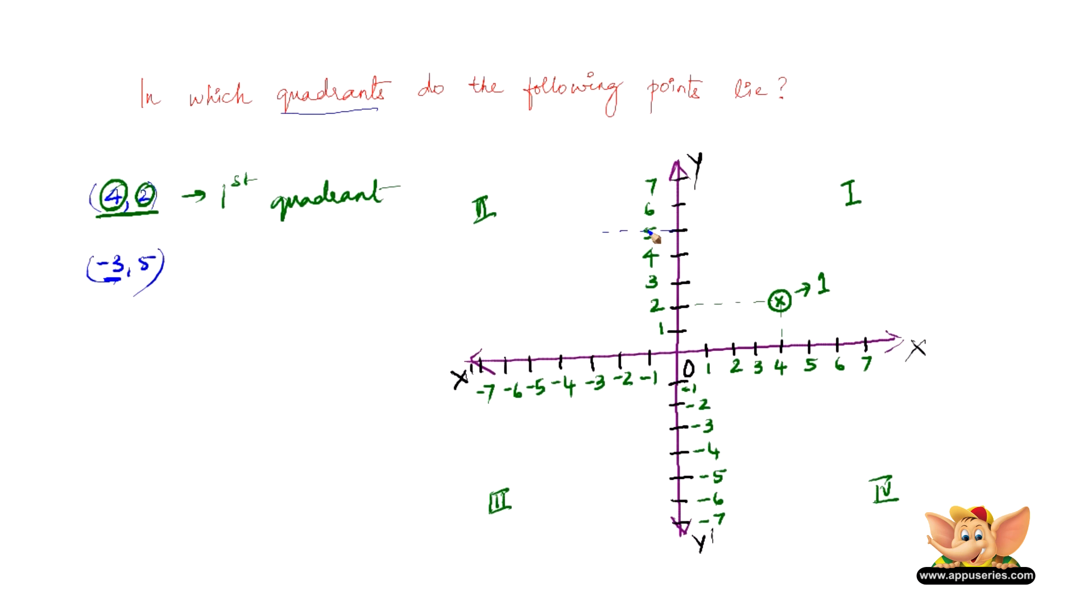So it lies somewhere here. If you plot the points, it lies exactly here. So the second point lies in the second quadrant. So we can write here, this lies in the second quadrant.